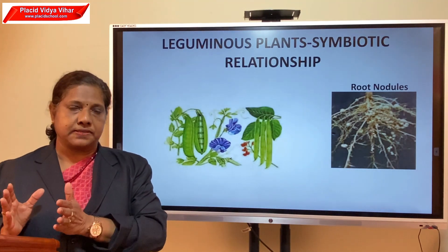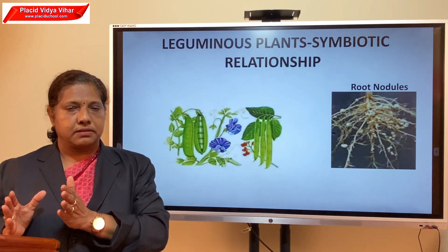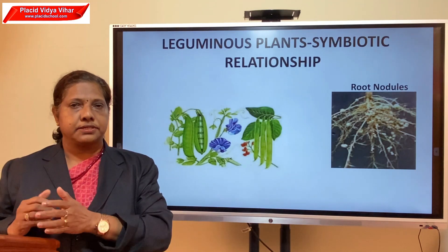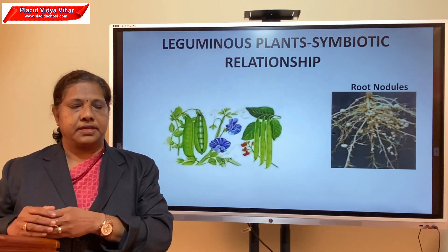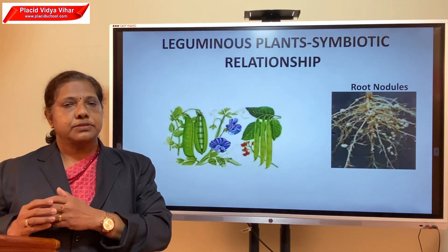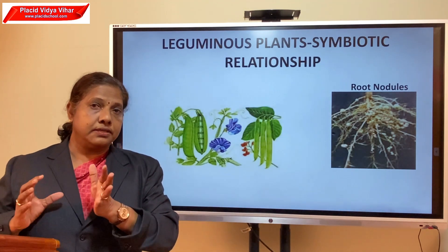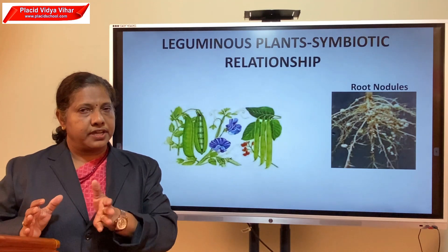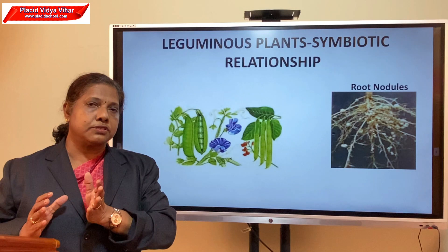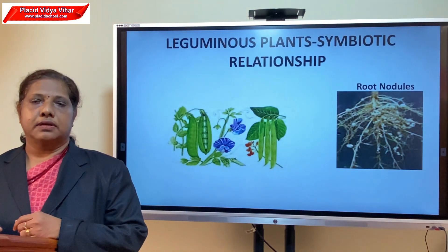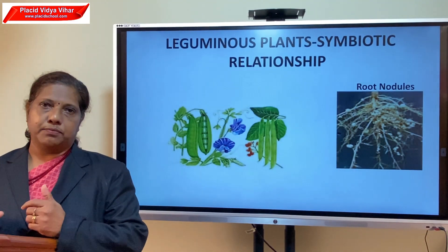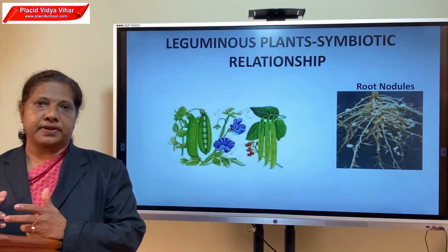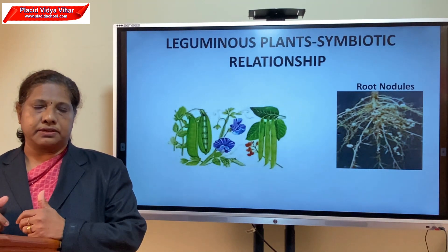A type of bacteria called Rhizobium is present in the root nodules of some leguminous plants like peas, gram, mung beans, and other legumes. This Rhizobium bacteria can absorb nitrogen and convert it into a soluble form. Since Rhizobium bacteria cannot prepare their own food, they live in a symbiotic relationship with leguminous plants — the bacteria get food and shelter from the root nodules, and in turn the plants get nitrogen. This is why pulses are a good source of protein.